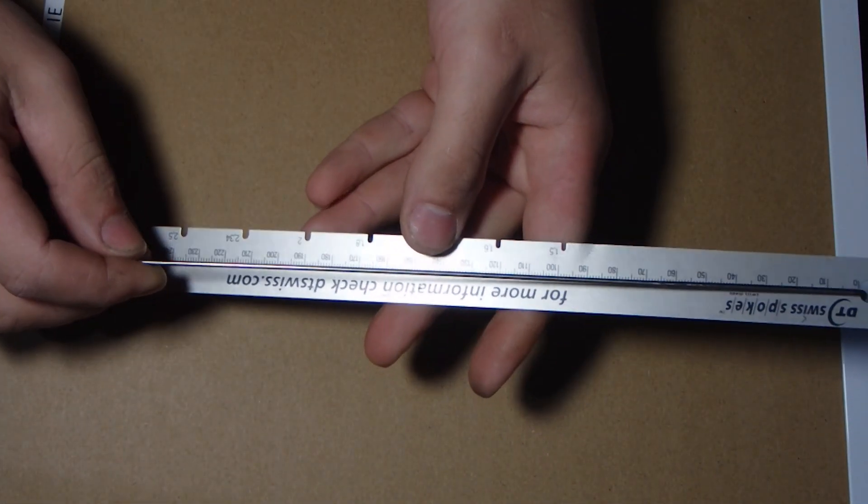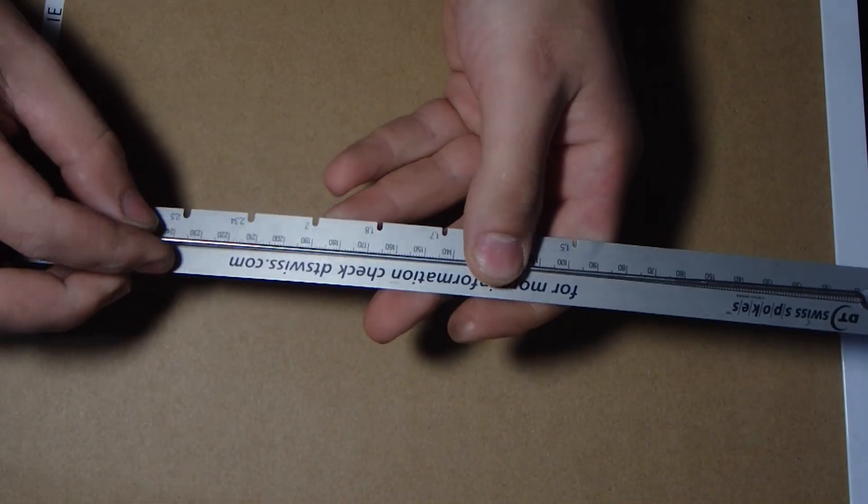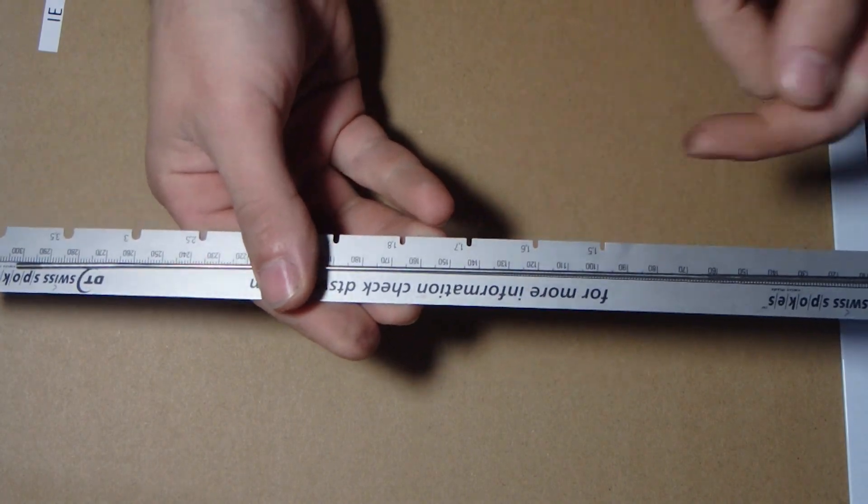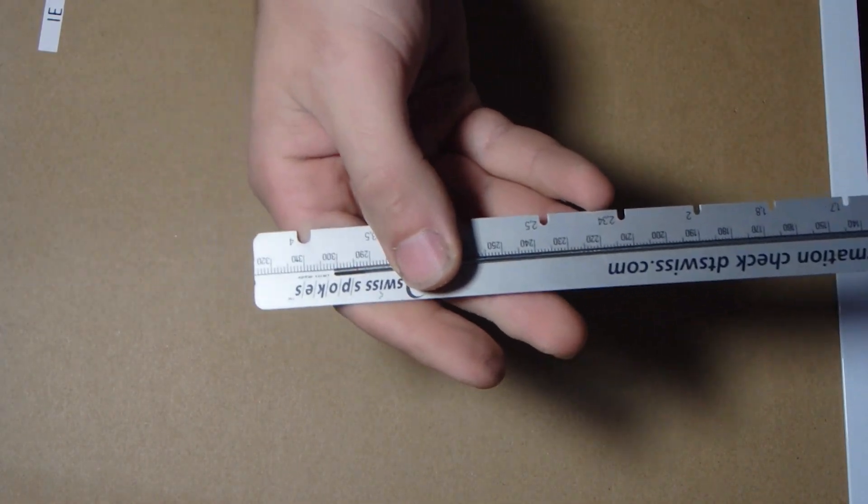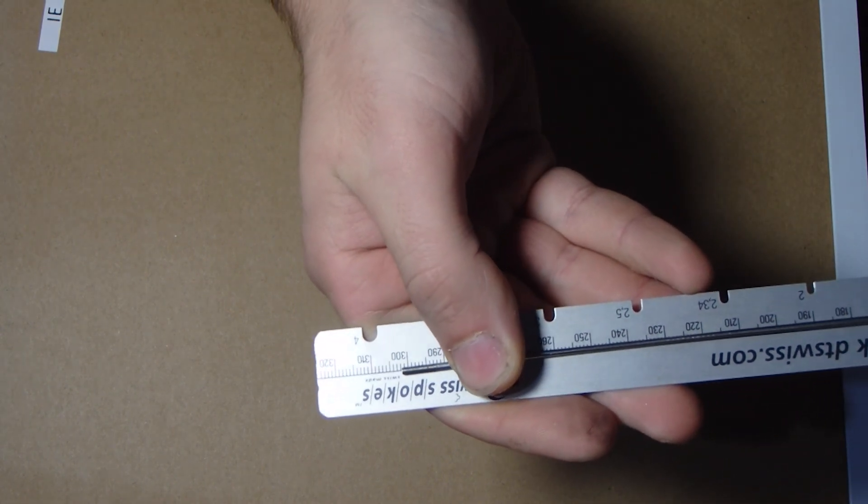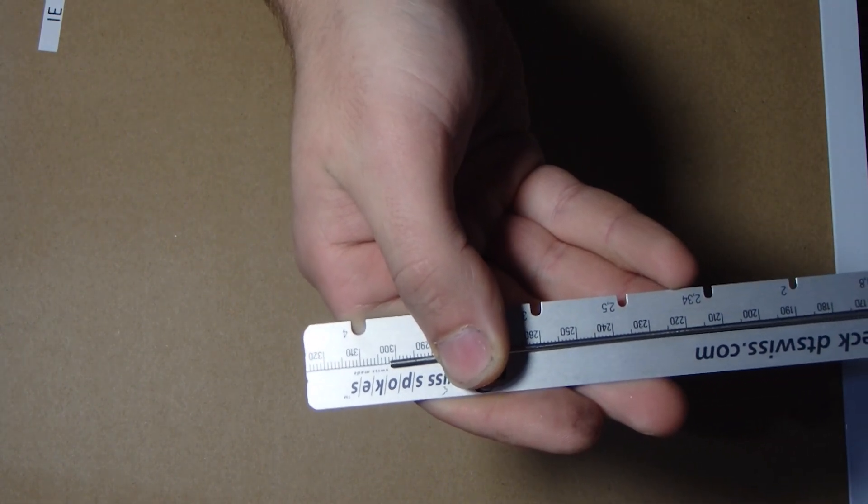All you're going to want to do is hook the front of the spoke into the hole at the end of the spoke ruler and apply a little bit of force down this length on the spoke, and then you come up here and find that this spoke is in fact a 302mm spoke.